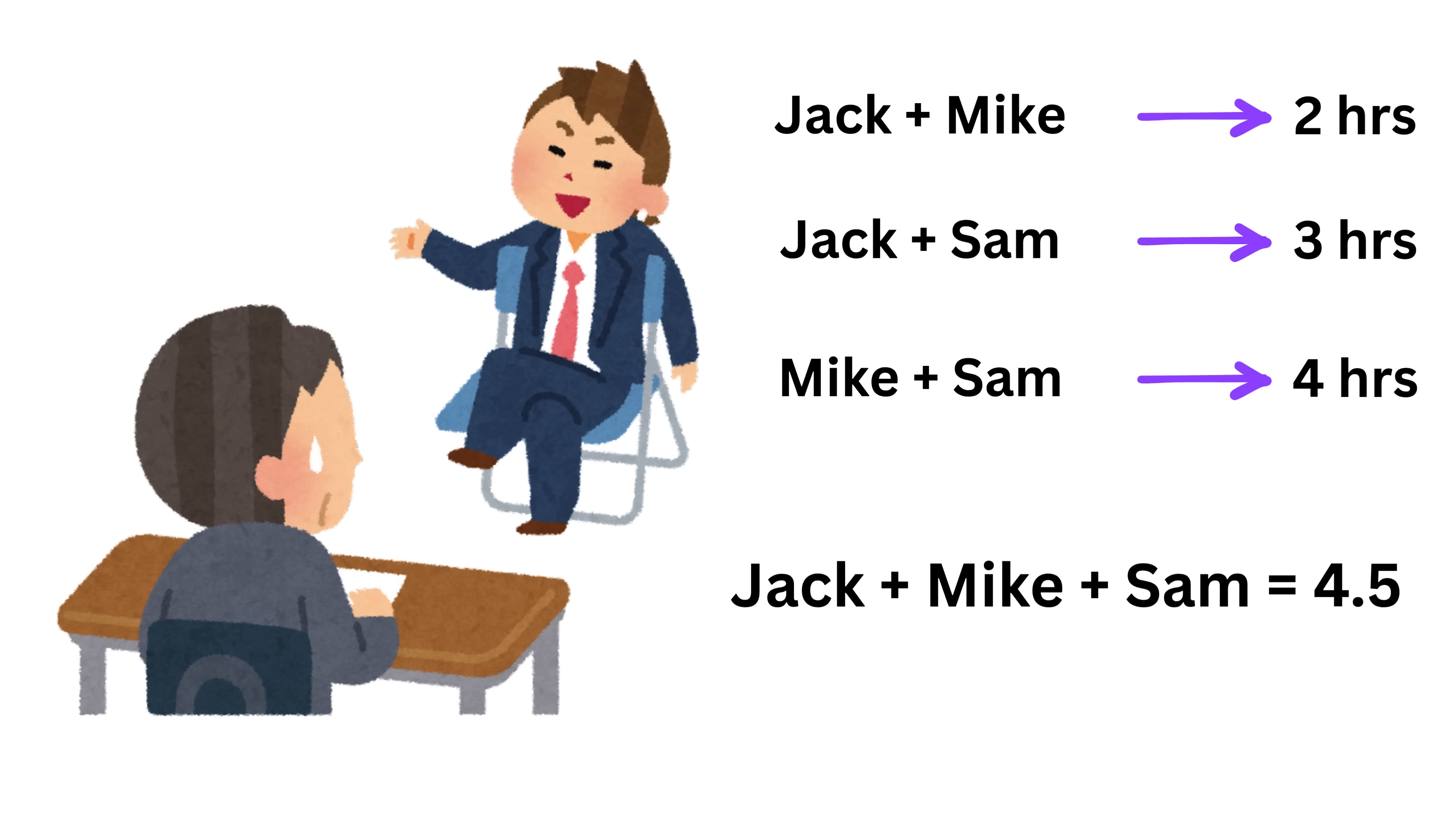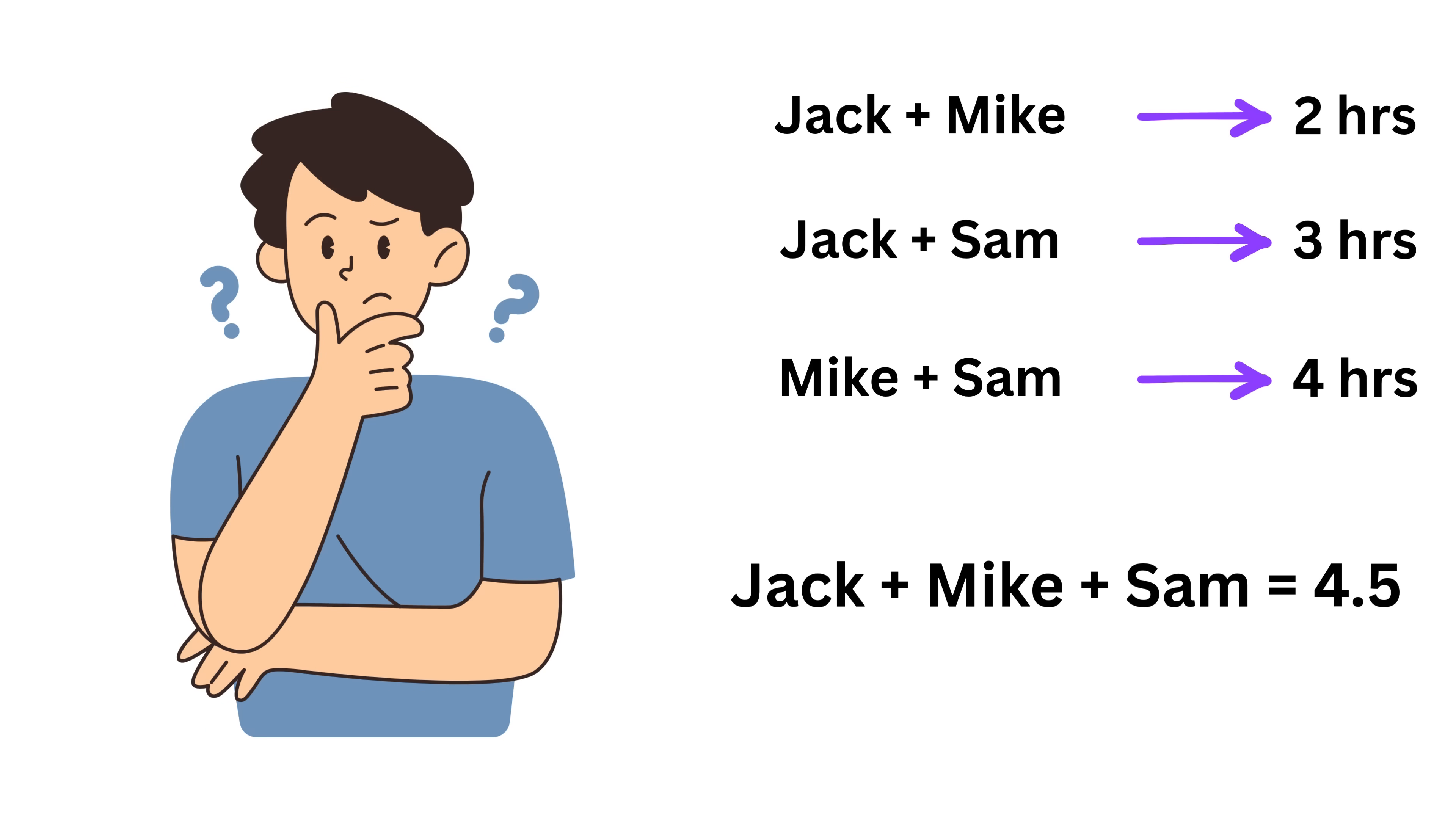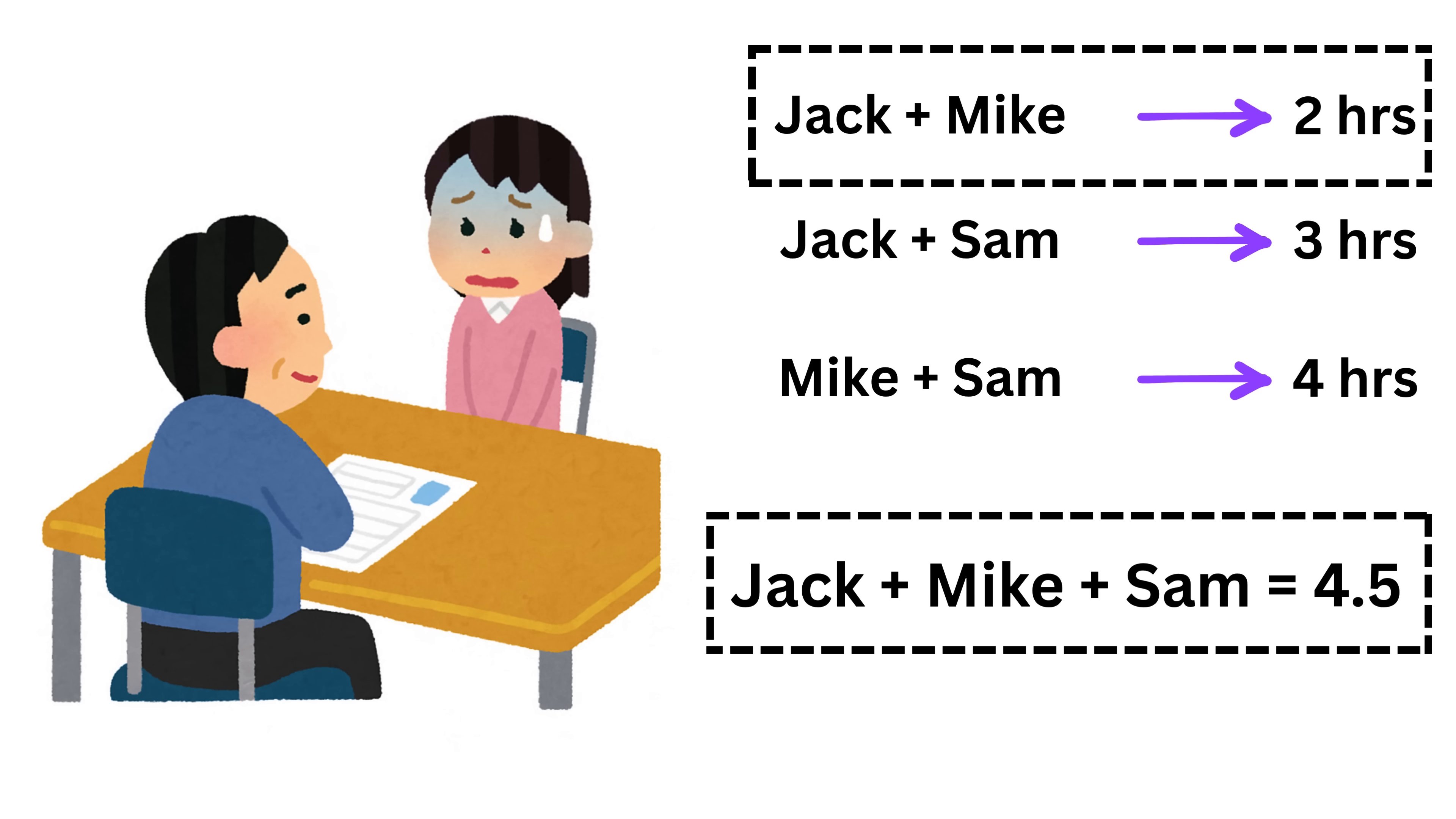They sit back with a smile, waiting for the interviewer to clap for their quick maths. And yes, they are right. The interviewer will clap, but it will be a slow clap, the kind that says, we are done with this interview. This is because if we think logically, it cannot be right. How can three people together take longer than two people? That makes no sense at all. If Jack and Mike can finish the job in two hours, adding Sam should make it faster, not slower. So something is definitely wrong in this way of thinking. That's the moment when the interviewer knows the candidate solved the equation, but never understood the problem.